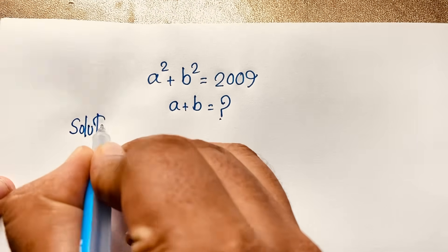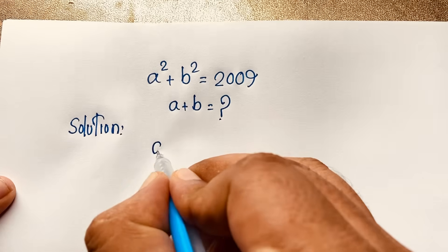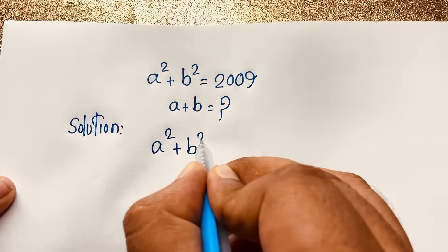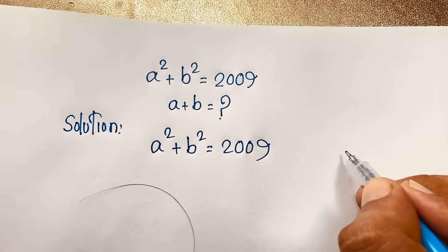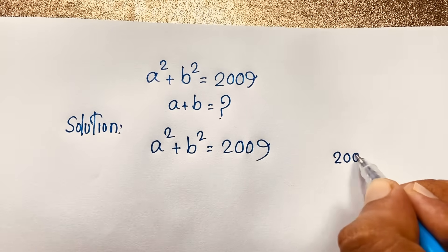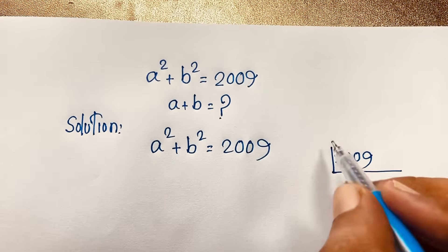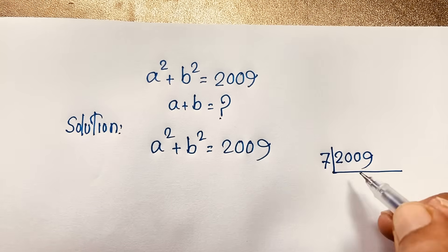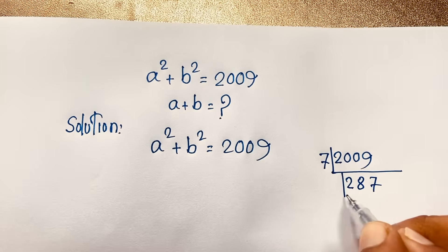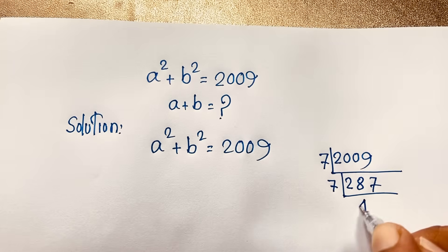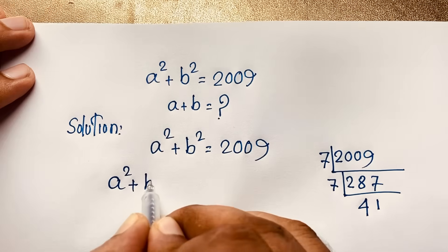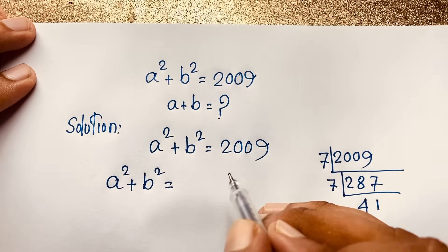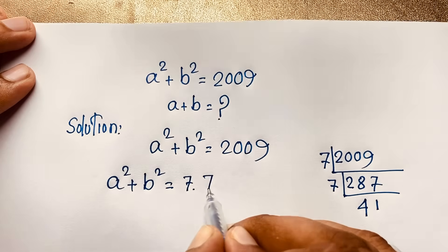Our question is a squared plus b squared equals 2009. First of all, we will find the factors of 2009. So 2009 divided by 7 gives 287, and if I divide 287 by 7, it gives 41. So you can see that a squared plus b squared equals 7 times 7 times 41.